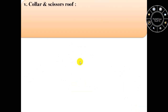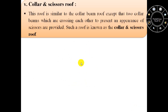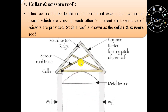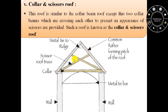The fifth form of single roof is collar and scissors roof. This collar and scissors roof is similar to the collar beam roof except that two collar beams which are crossing each other to present an appearance of scissors are provided. Such a roof is known as the collar and scissors roof.